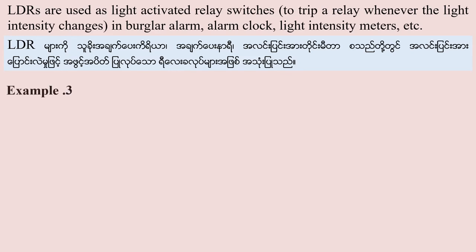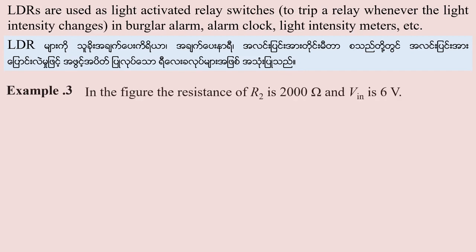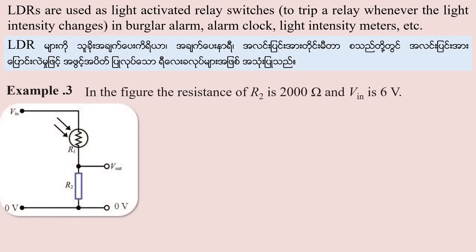Example 3: In the figure, the resistance of R2 is 2000 ohms and the input voltage Vin is 6 volts.